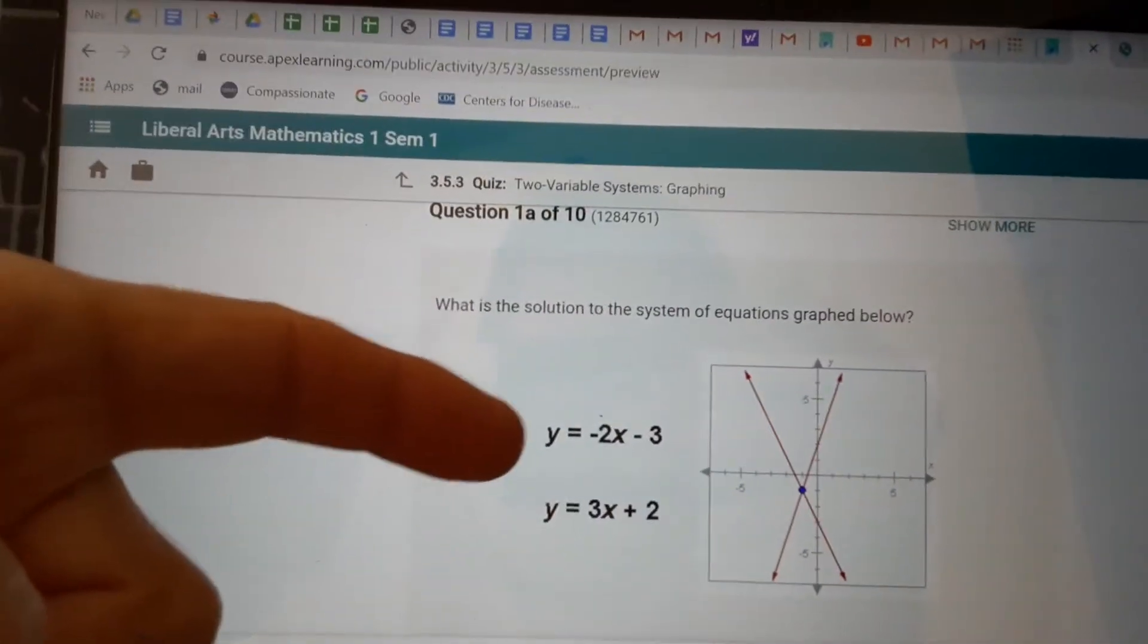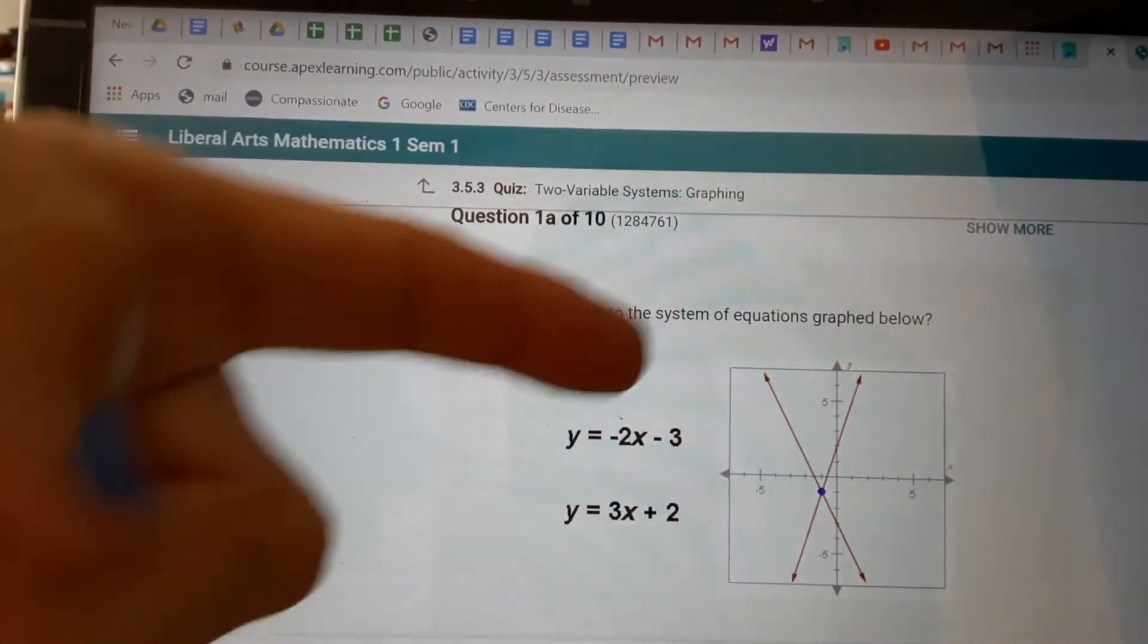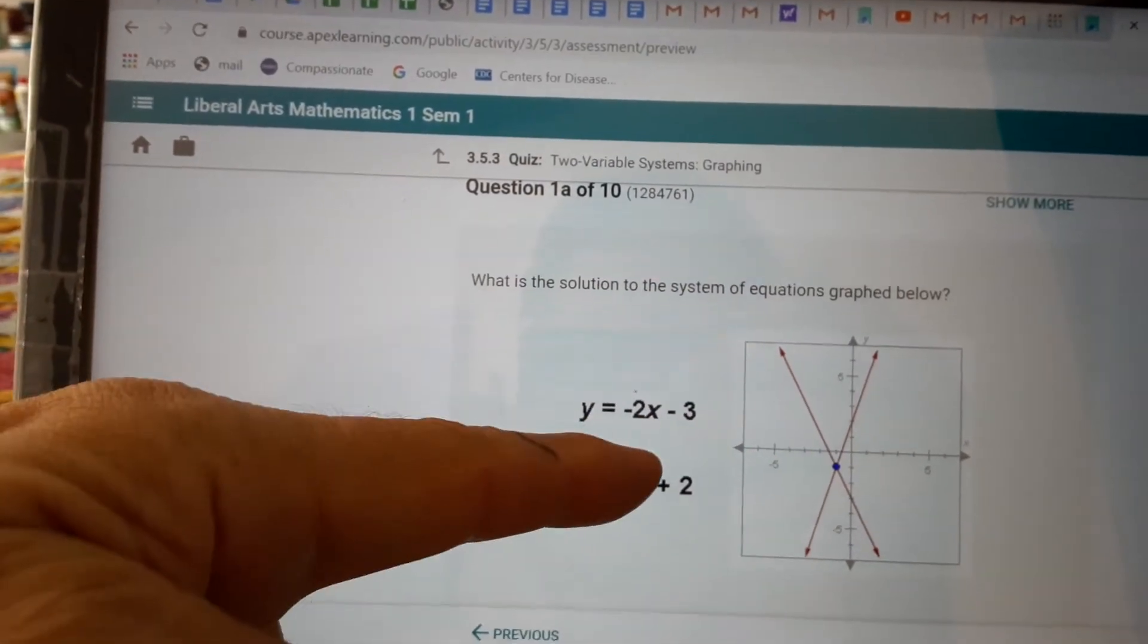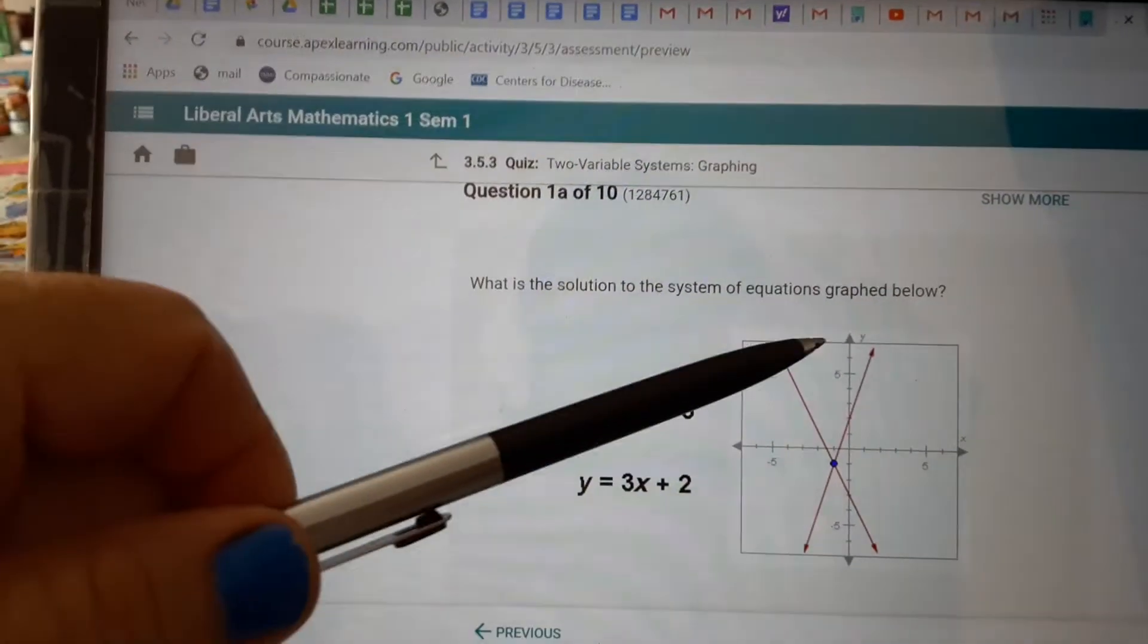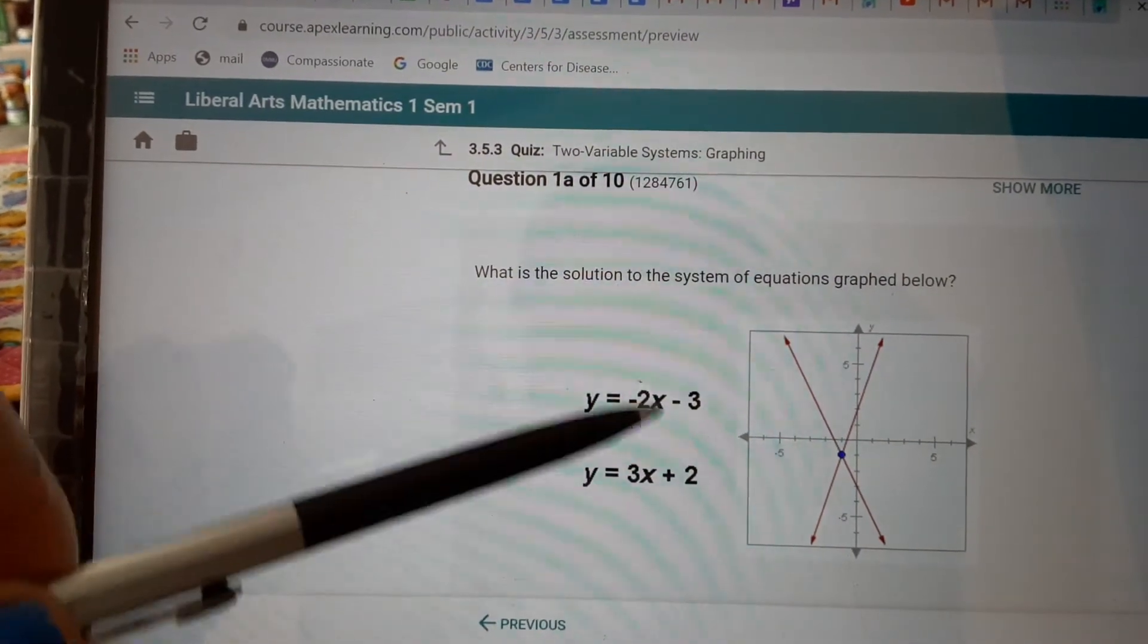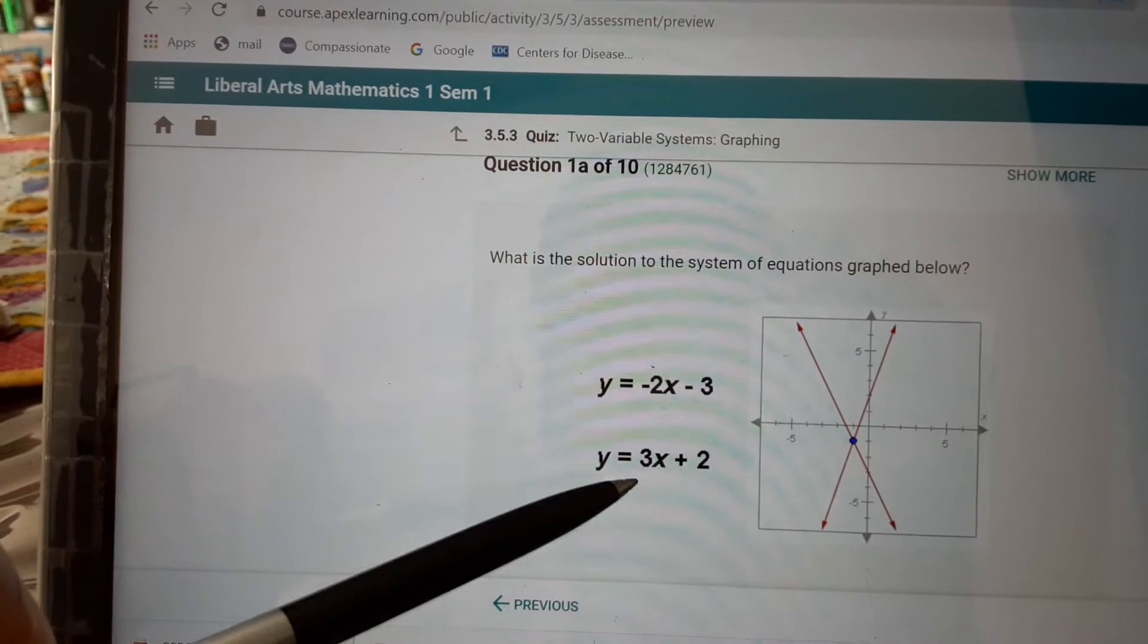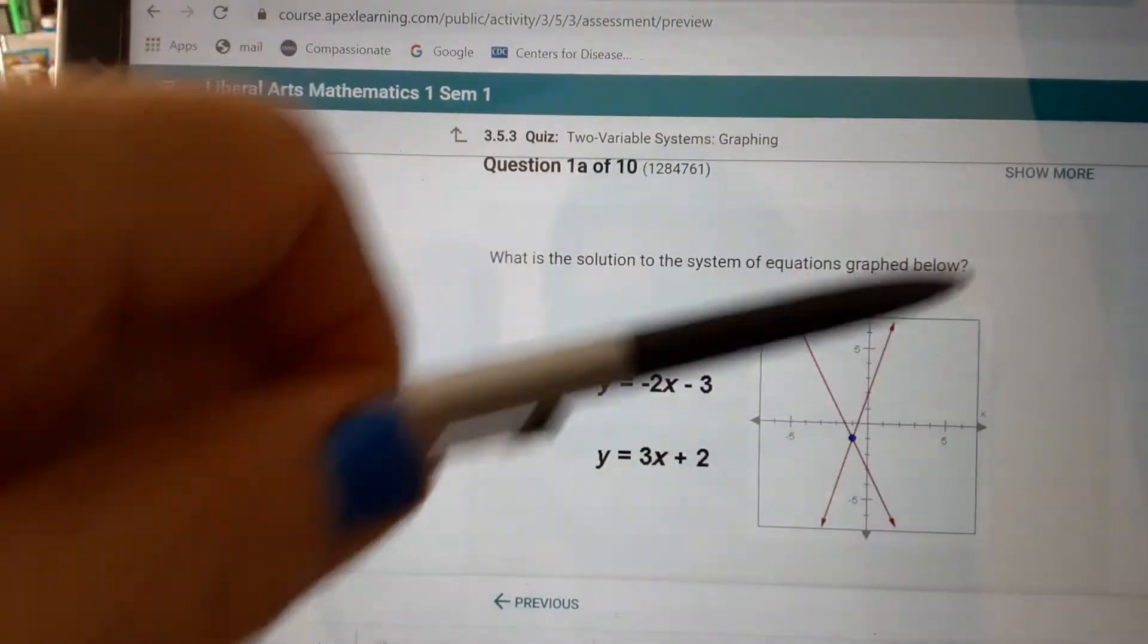So, let's look at this. They're saying this line here is negative 2x, because it's going down. See how it's going down? That negative 2 means it's going down. The positive 3 must go up.